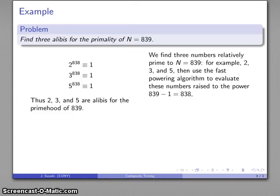Does this guarantee 839 is prime? No, not really, but the existence of multiple alibis is suggestive. Of course, alibis don't necessarily guarantee anything.